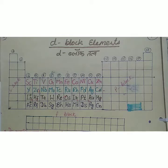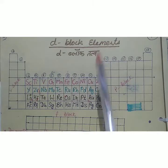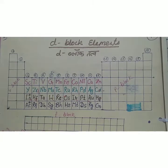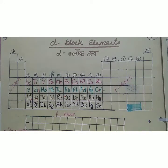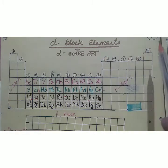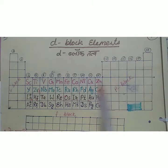Welcome to chemistry class. Today we start a new chapter on d and f block elements. In the periodic table, there are 18 groups and 7 periods. The first two groups are s block elements, the last six groups are p block elements, and between the s block and p block is the d block.